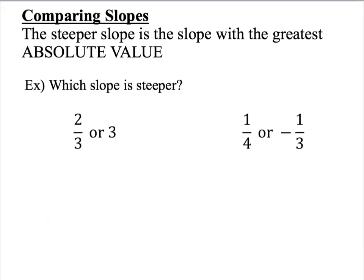We can compare the steepness of lines by looking at their slopes. The steeper slope is the slope with the greatest absolute value. Hopefully remember that absolute value means the positive value of whatever the number is. So the absolute value of 1 is 1. The absolute value of negative 1 is also 1. So whatever the number is, it has to be positive.